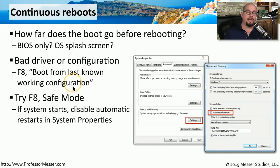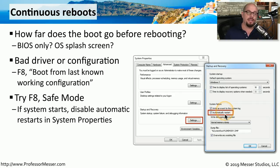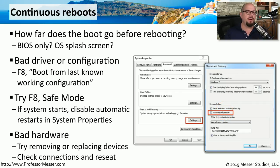Another option you may want to try is starting in safe mode. Press the F8 key during the startup process and select safe mode inside of Windows. This will load a basic configuration of Windows, and once you're inside there, you can even choose to disable any automatic restarts in the system properties of Windows. If you think this problem might be caused by hardware, you can try removing that hardware or replacing it with known good hardware. It might also be useful to check all of the connections to all of the different systems to make sure that you've got good solid connections on all of your adapter cards and all of your power connectors.